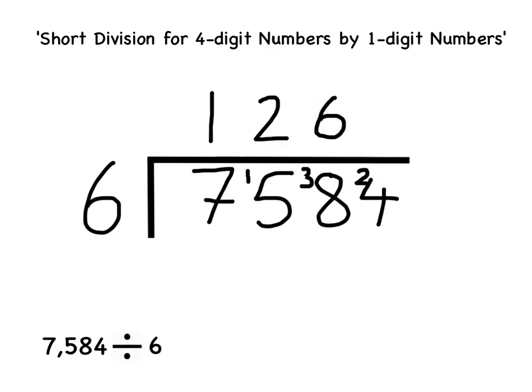Once again, that remainder of 2 turns the 4 into 24. So my final division is to work out how many 6's there are in 24. There are four 6's in 24, so I'm going to write the 4 just there. This gives me the answer to my original division: 1,264.